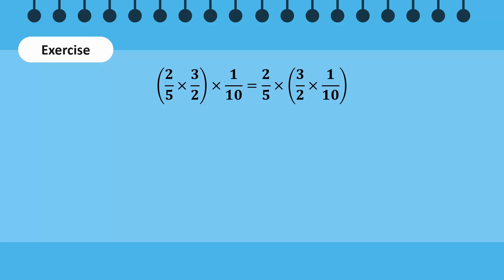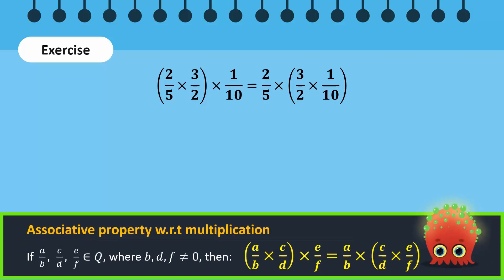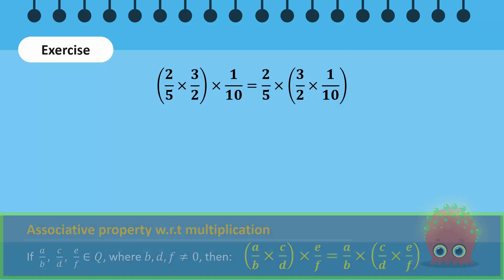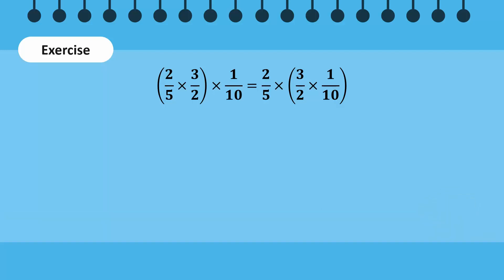We verify by ensuring that the left-hand side and right-hand side of this equation is the same. 2 over 5 times 3 over 2 is equal to 3 over 5. 3 over 5 times 1 over 10 results in the rational number 3 over 50.